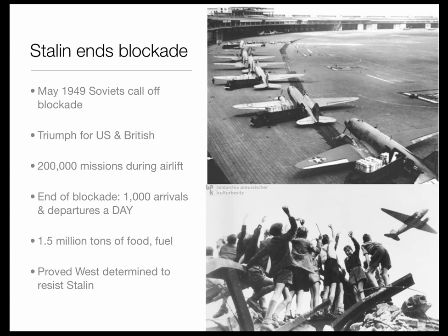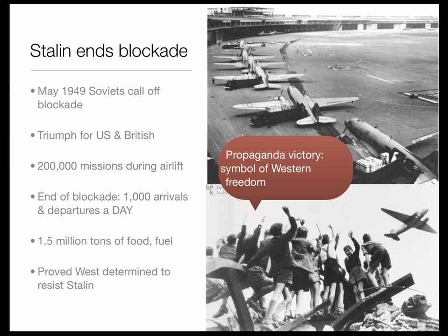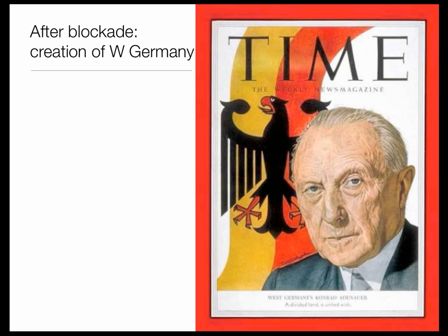It proved that the West was determined to resist Stalin. Stalin saw the depth of that determination. Although he had aggressively blockaded West Berlin, the only thing he could have done was fire on Western aircraft — which would have led to a major conflict he wasn't ready for. It was also a huge propaganda victory, with great images of symbols of Western freedom: planes bringing in chocolate to the children of West Berlin. Stalin failed to get his political objectives because the blockade led to the very thing he didn't want.